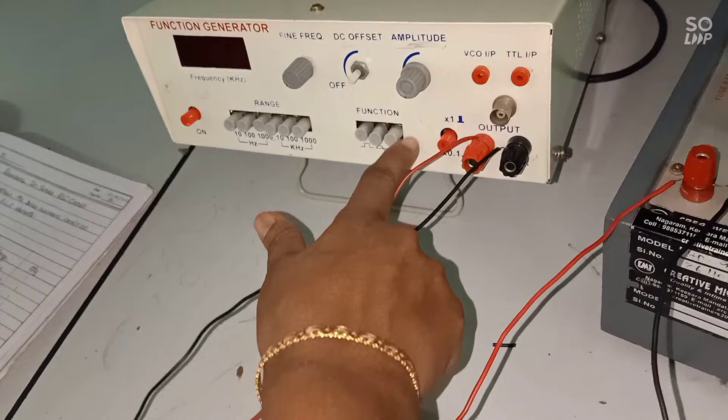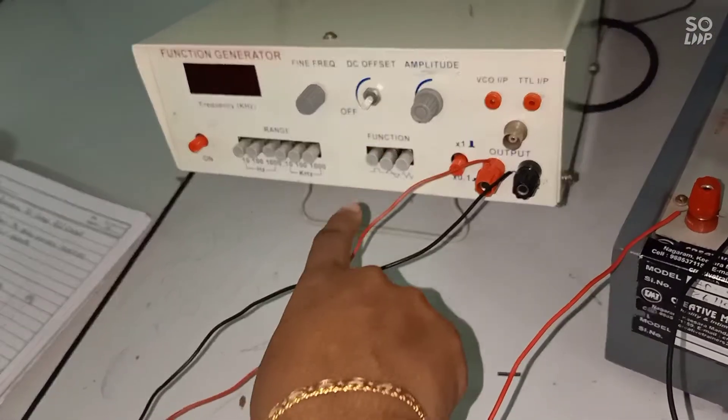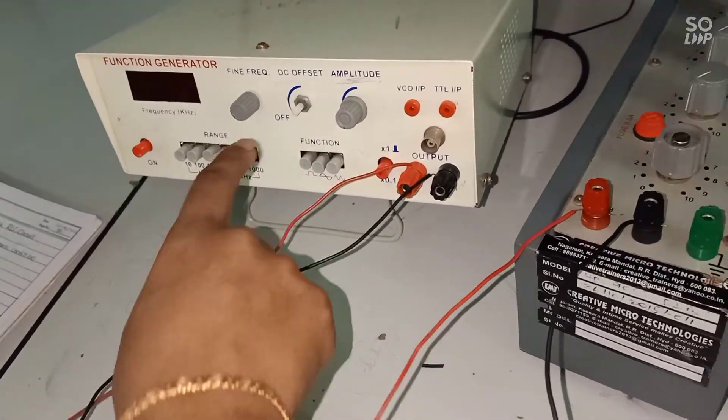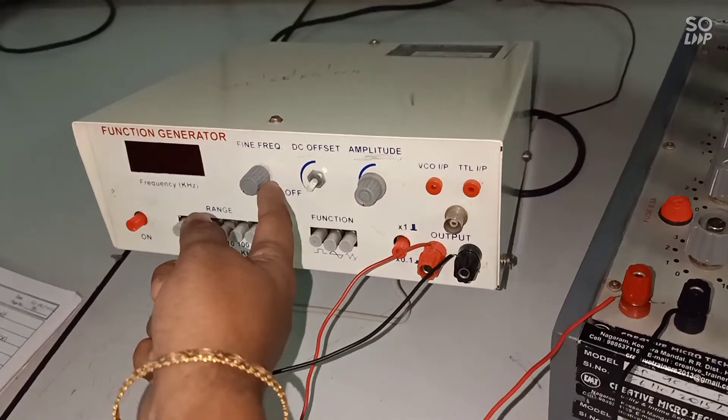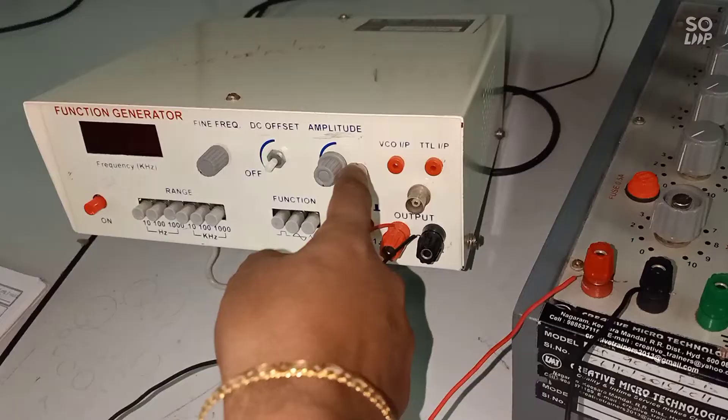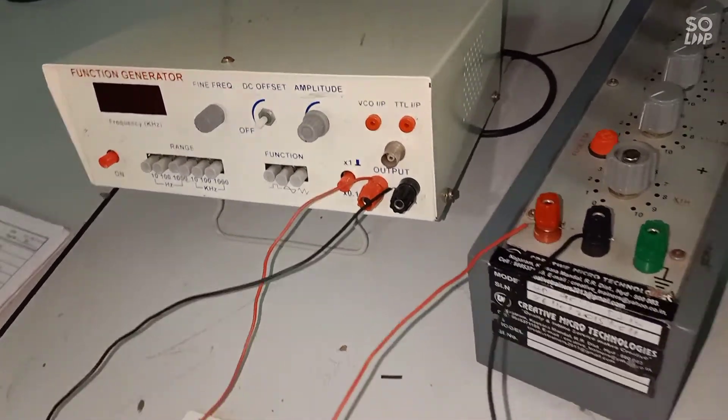We have three signals. As per our experiment we will be using this step signal. Then you have three knobs here, one is for frequency fine tuning. This DC offset is always kept in OFF position. Amplitude is kept in maximum which is used for voltage variation.